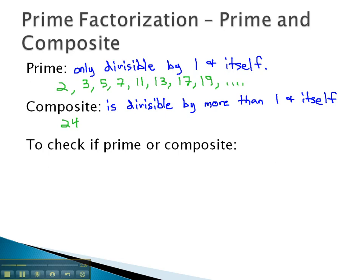To check if a number is prime or composite, at least if it's under 100, we will use our divisibility test.